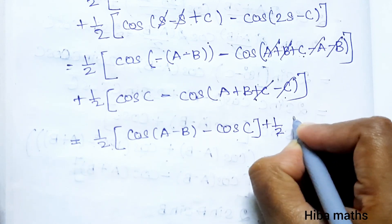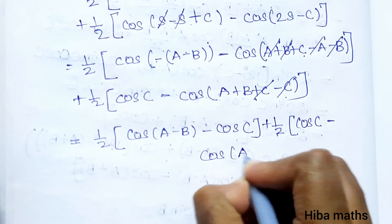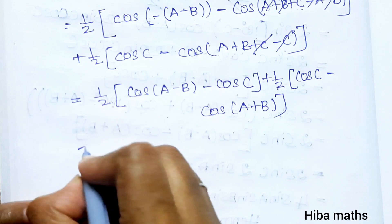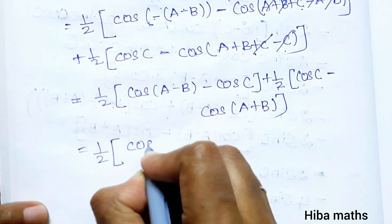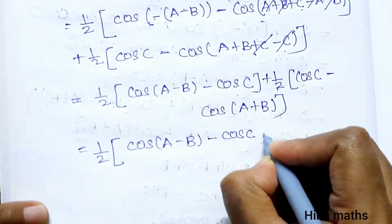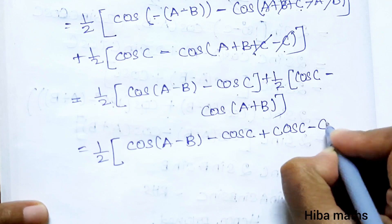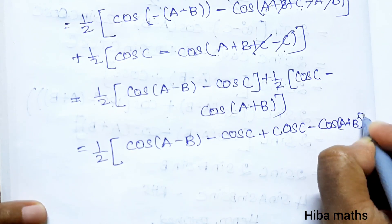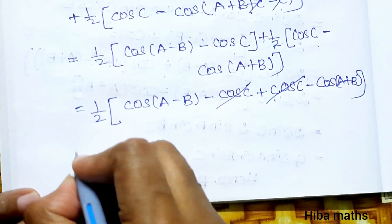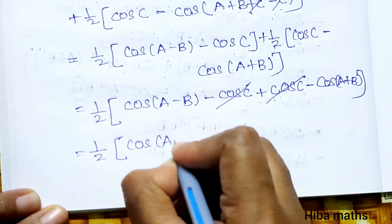So we have: plus 1/2 cos(c) minus cos(a plus b). Taking 1/2 as common, the expression becomes 1/2 [cos(a-b) minus cos(c) plus cos(c) minus cos(a+b)]. The minus cos(c) and plus cos(c) cancel, leaving 1/2 [cos(a minus b) minus cos(a plus b)], which equals sin(a)sin(b). Hence LHS equals RHS.